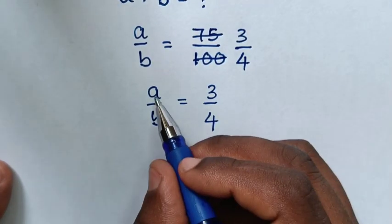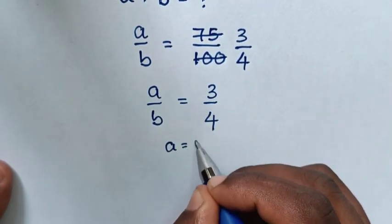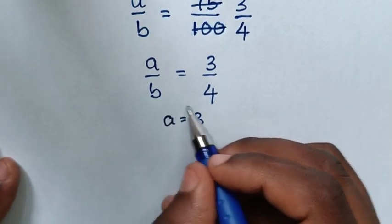Then we compare the numerator A is equal to 3, and denominator B is equal to 4.